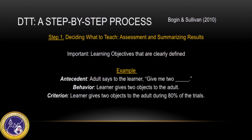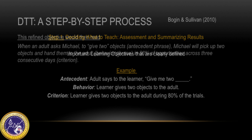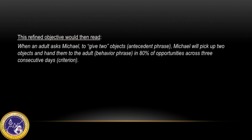Ogin and Sullivan (2010) provide step-by-step instructions for implementation of a discrete trial program for a learner with autism. Step one is deciding what to teach — assessment and summarizing results. Learning objectives need to be clearly defined using an antecedent-behavior-criterion (ABC) format. For example: 'When an adult asks Michael to give two objects' (antecedent), 'Michael will pick up two objects and hand them to the adult' (behavior), 'at 80% of opportunities across three consecutive days' (criterion).